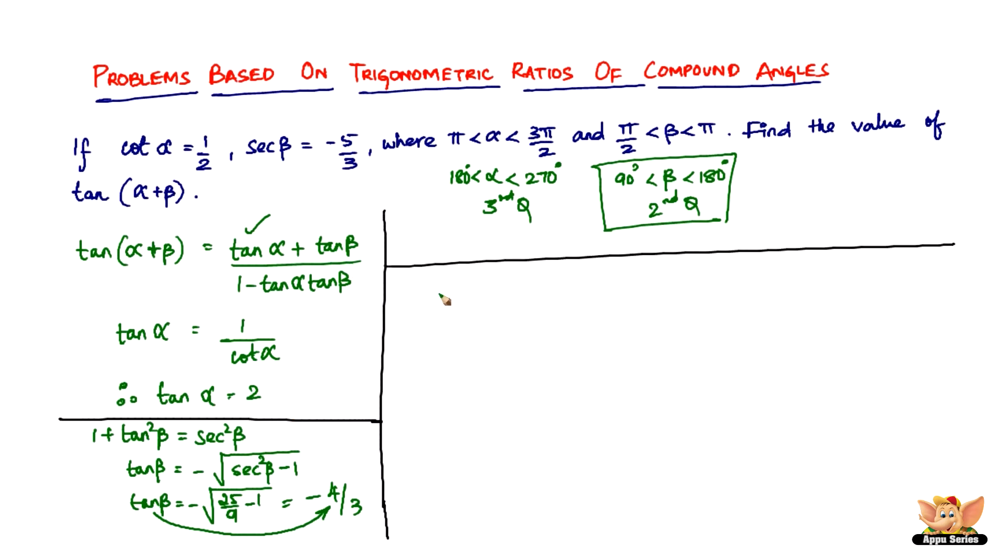So here it is. Now we have tan(α+β) equal to tan α plus tan β divided by 1 minus tan α into tan β. So tan α is 2, so 2 plus tan β is minus 4/3, divided by 1 minus 2 times minus 4/3.